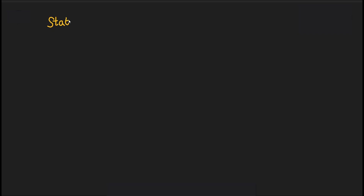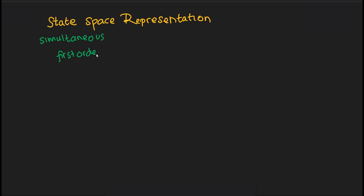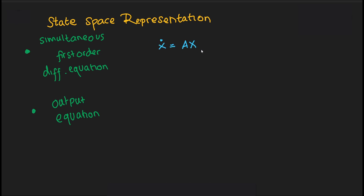Let us now discuss the state space representation itself. The state space representation is a mathematical model for a system that consists of simultaneous first order differential equations and an output equation. Generally, it is shown as two equations: the state equation, x-dot equals Ax plus Bu, and the output equation, y equals Cx plus Du.